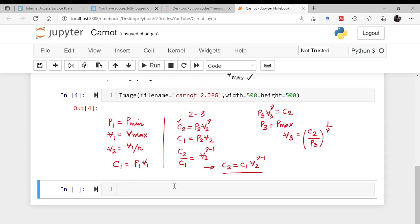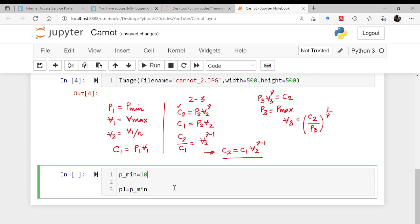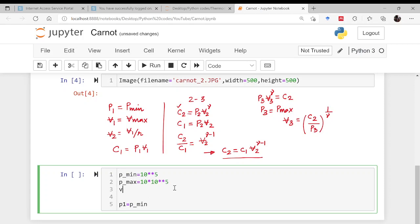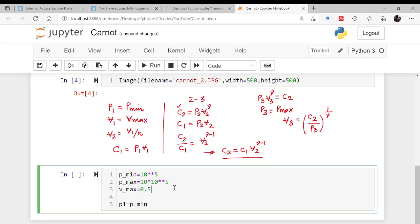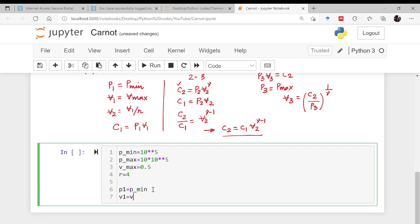First what we will be doing is defining these parameters. What is P1? P1 is the minimum pressure. In the last video I am sorry I said P1 was volume, that was just a slip of tongue. I am sorry for that. It is the minimum pressure. P1 is the minimum pressure and V1 is the maximum volume.